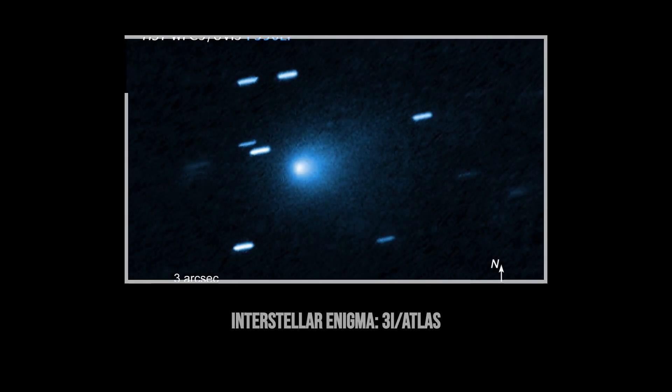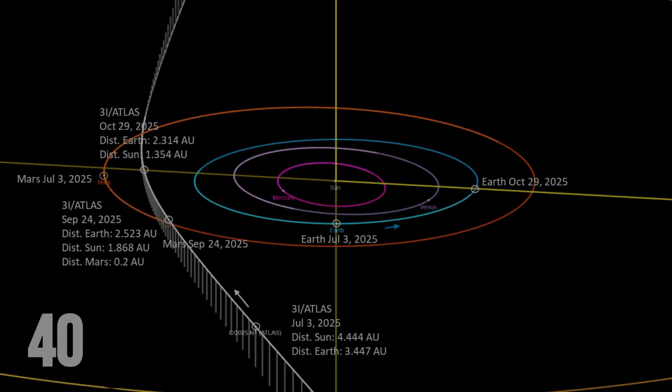A mysterious interstellar object discovered in July 2025 and hurtling toward our sun at nearly 60 kilometers per second is defying every prediction.